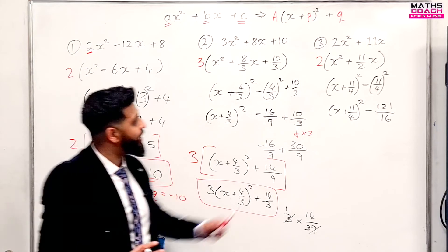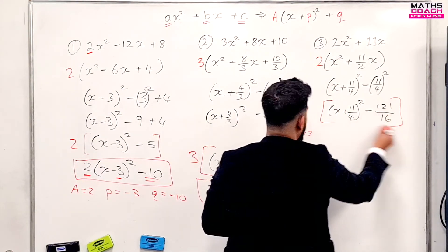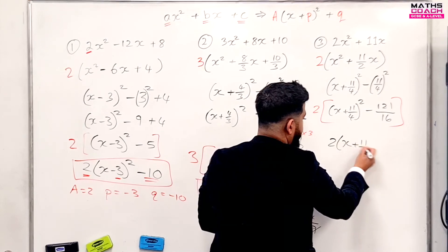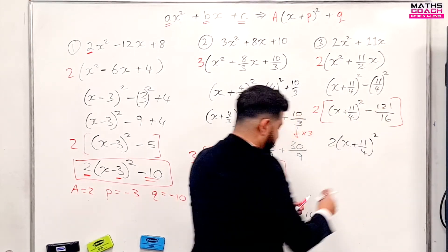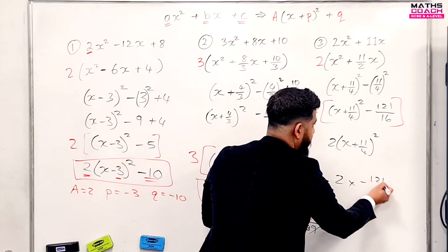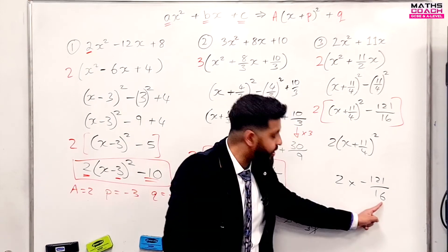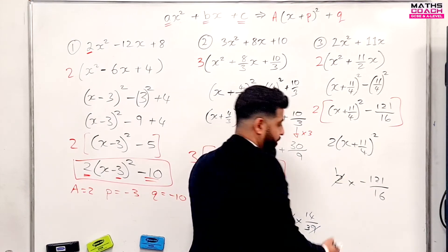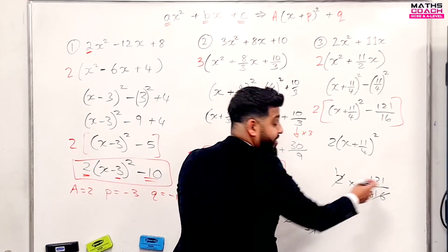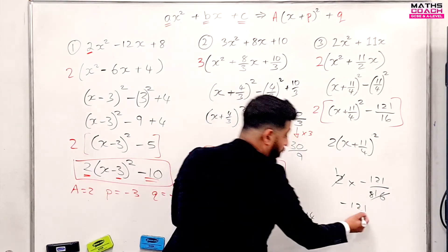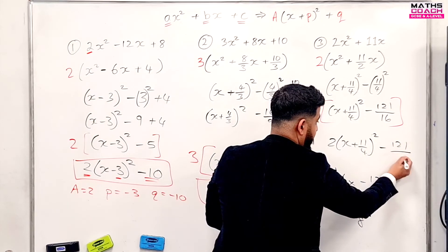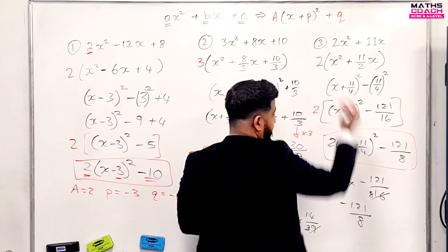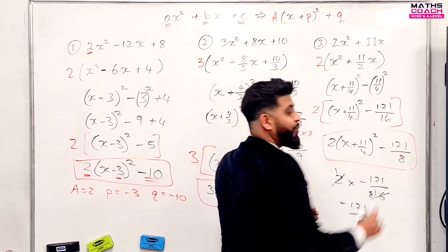And finally, on to the last one. We have that 2 here, so we put the 2 outside and it jumps over to multiply. The 2 is going to multiply all of that — 2 times minus 121 over 16. Now 2 and 16 can be simplified: divide both by 2, this becomes 1 and this becomes 8. So you have 1 times minus 121, which is minus 121 over 8. So you can write minus 121 over 8. That is completing the square for that example. Your A is 2, your P is 11 over 4, and your Q is minus 121 over 8.